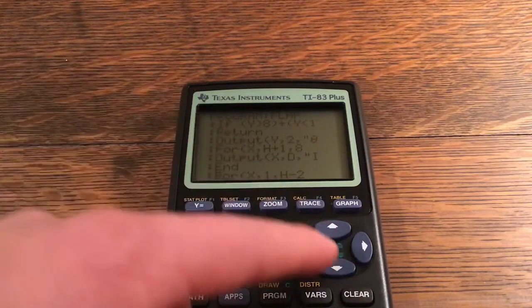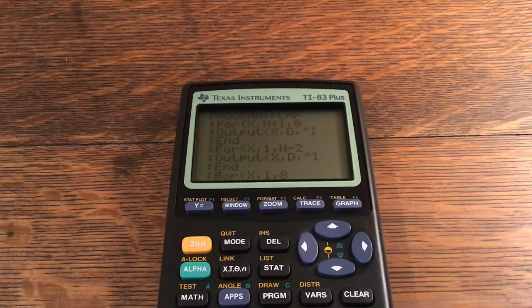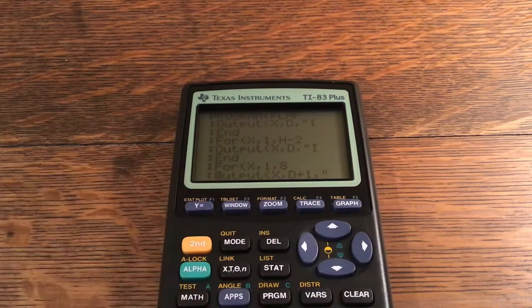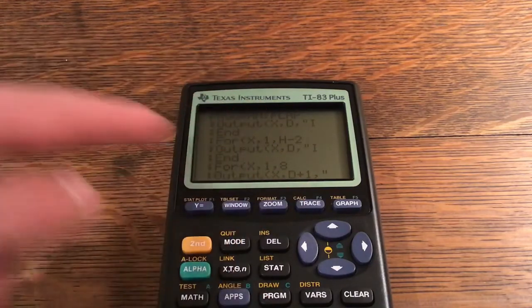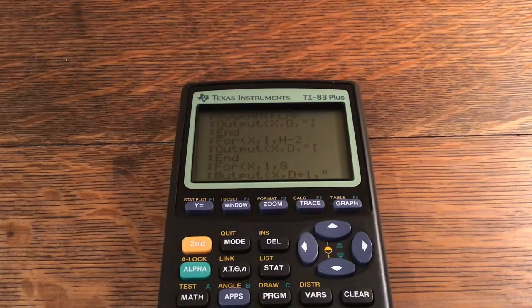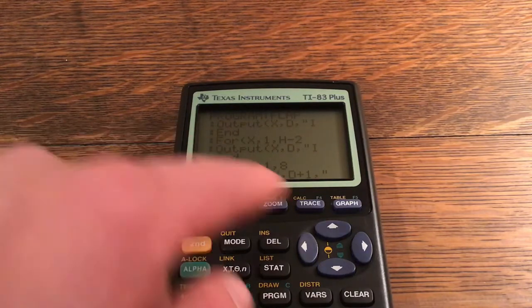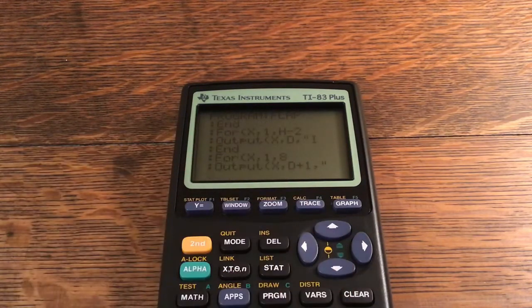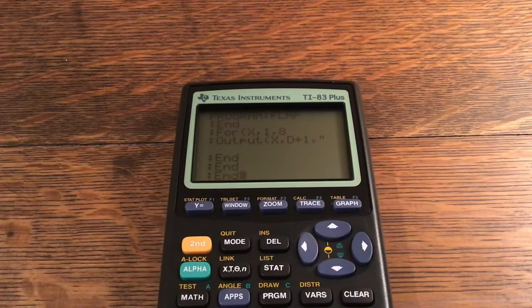Output(X,D,"i") and For(X,1,8). And then this one is erasing, and the reason it's at D+1 is because you don't want to erase what you just drew, you want to erase where the pipes were. So For(X,1,8): Output(X,D+1," "). End. And there's three Ends right there, and that is the entire program to run Flappy Bird.